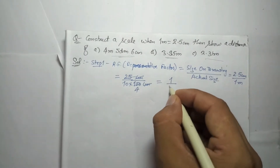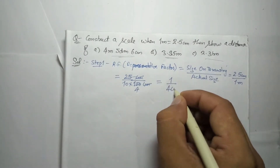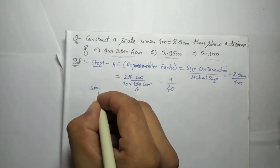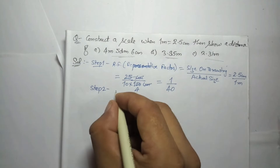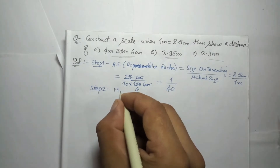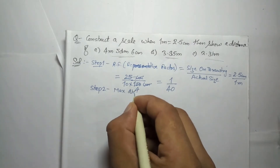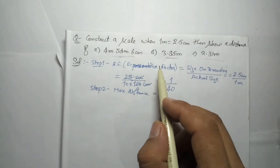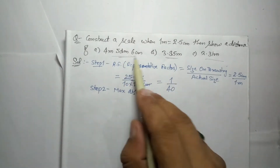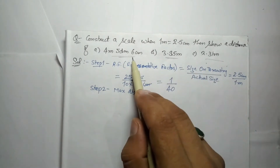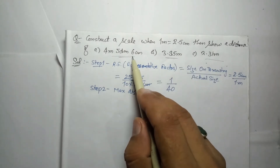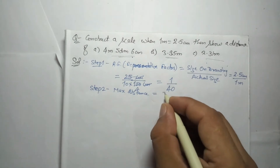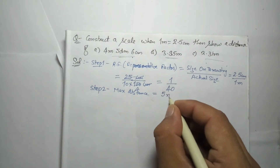Step 2: find the maximum distance. In this question the maximum distance is not given, so just check the bigger value — 4 meter 5 decimeter 6 centimeter — and round up. The maximum distance to measure will be 5 meters.